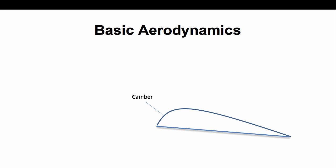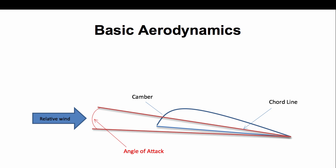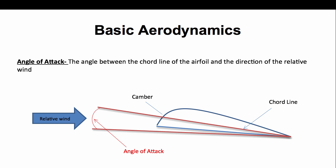The camber is the characteristic curve of the airfoil's upper and lower surfaces. The chord line is an imaginary straight line drawn through the airfoil in the direction of the relative wind. The chord line is a very important determinant of what's called the angle of attack, which is simply the angle between the chord line and the direction of the relative wind.